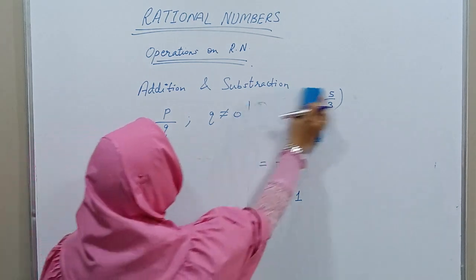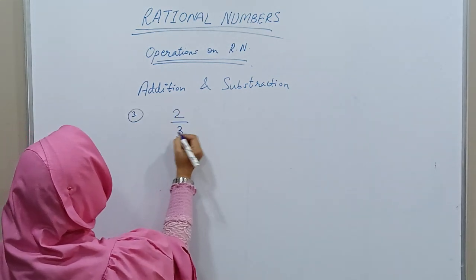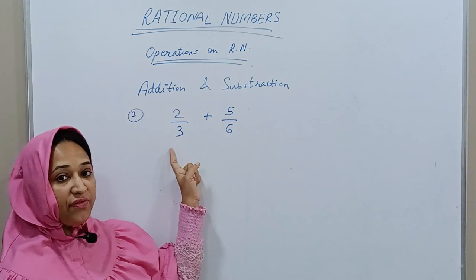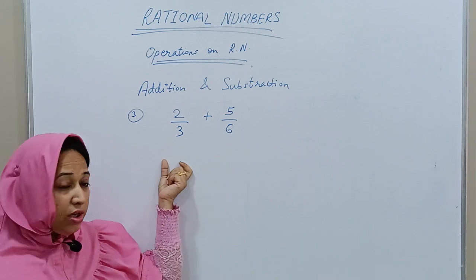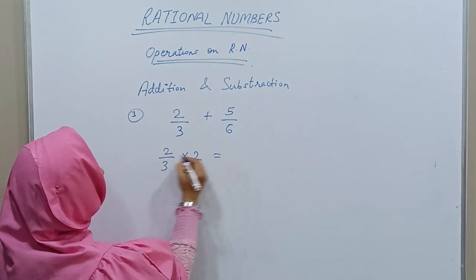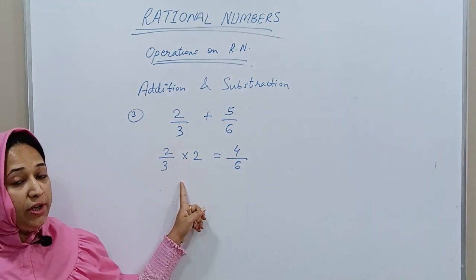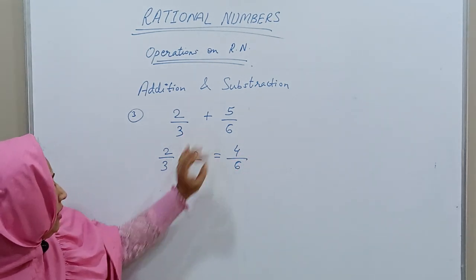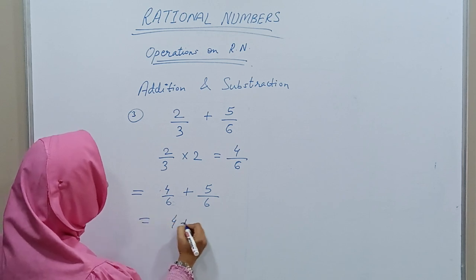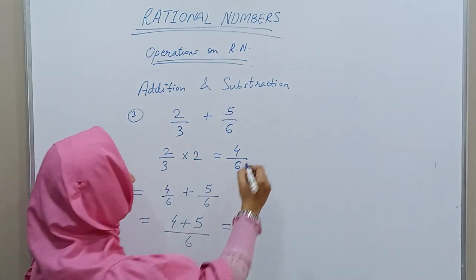Now let's take an example with different denominators: 2/3 + 5/6. The denominators are different — 3 and 6. Since 6 is a multiple of 3, we multiply 2/3 by 2/2 to get 4/6. Always multiply both the numerator and denominator. Now the denominators are the same: 4/6 + 5/6 = 9/6.